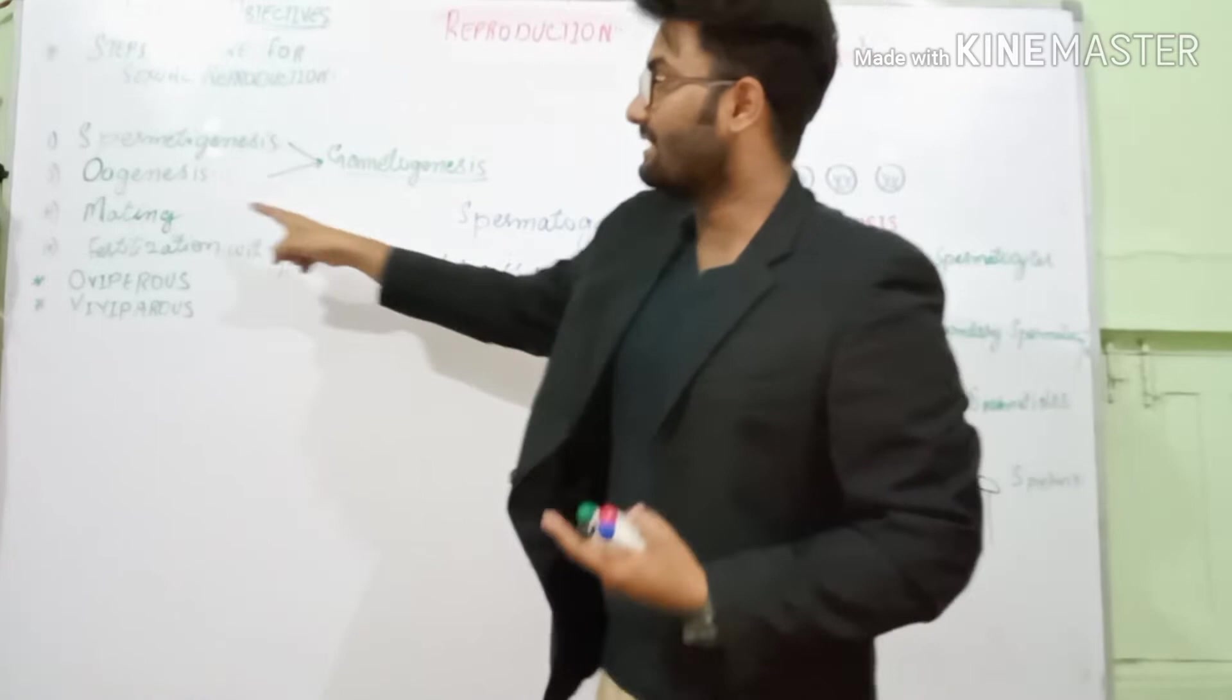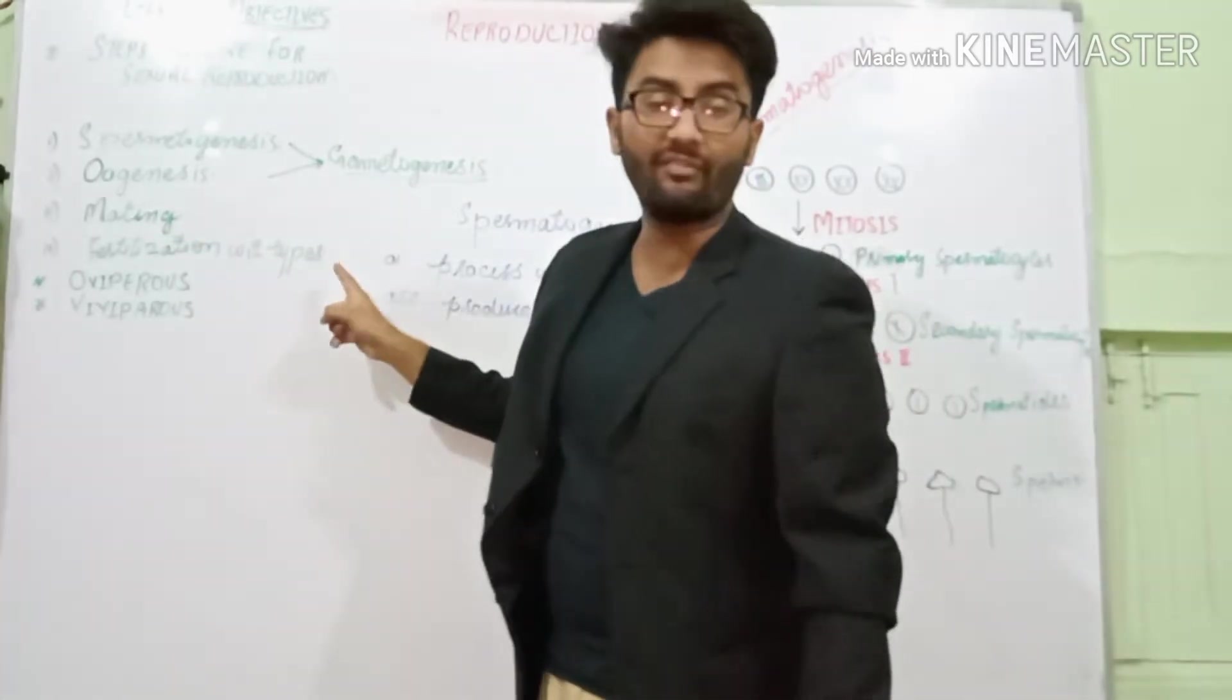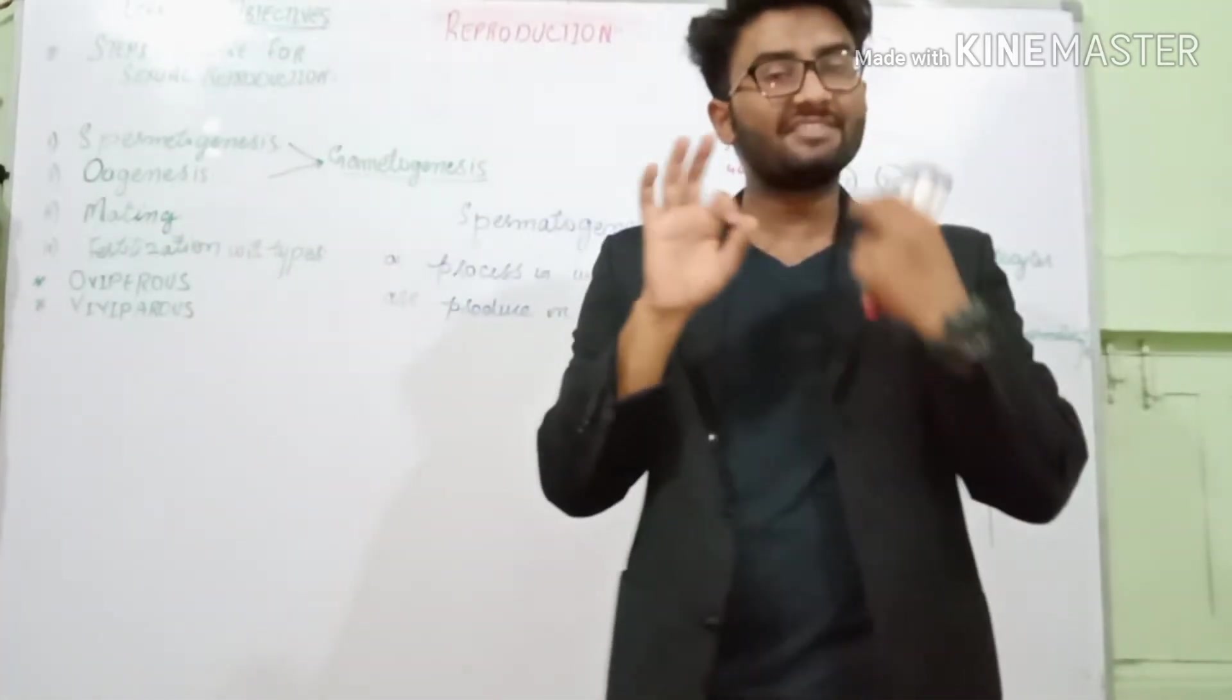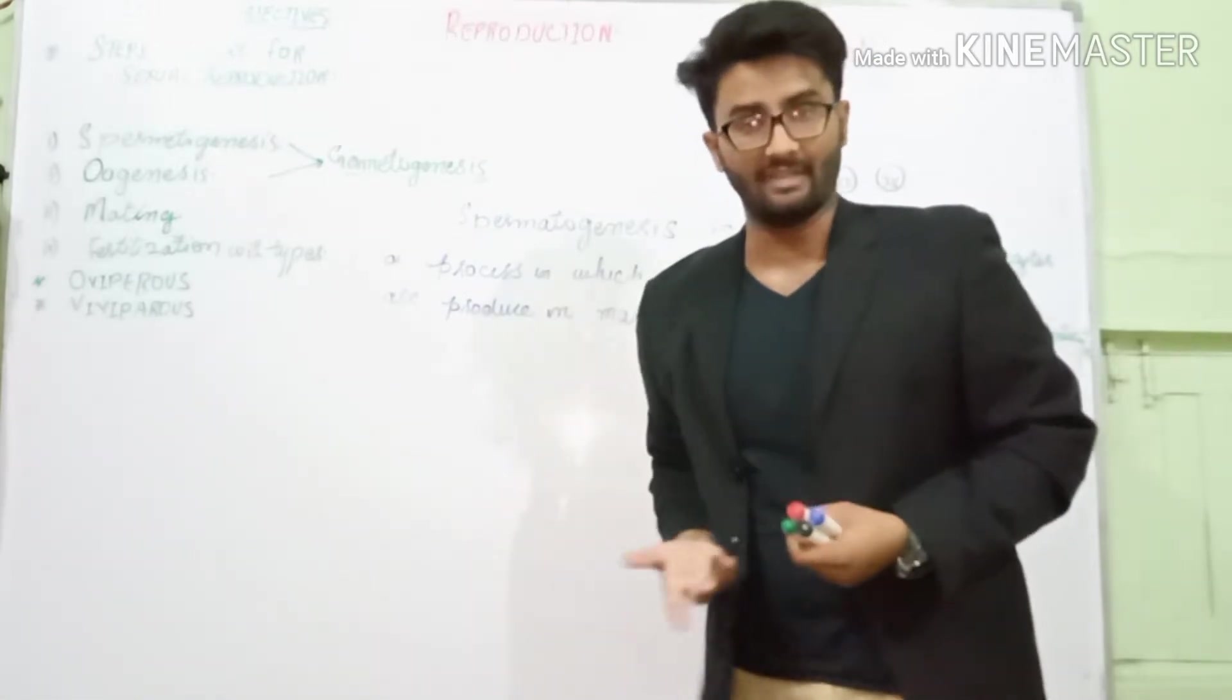First one is gametogenesis, second is mating, and third one is fertilization. These are the three steps what living organisms perform to reproduce themselves.